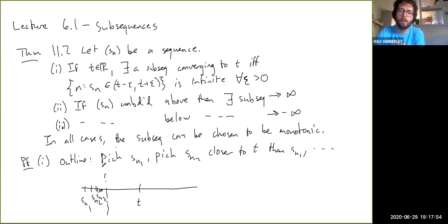Basically, we're going to keep, we're going to pick a term in our subsequence and then we're going to try to pick one that's even closer. And then we're going to keep picking things that are closer and closer to the limit we're trying to get to. The tricky thing about it is, proof of one, outline. Pick SN1, then pick SN2 closer to T than SN1 and so on, right? But there are two tricky things here.